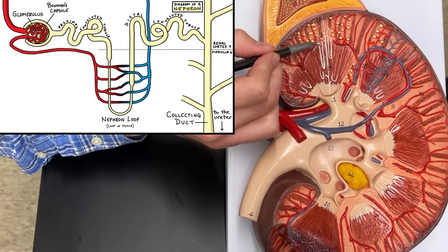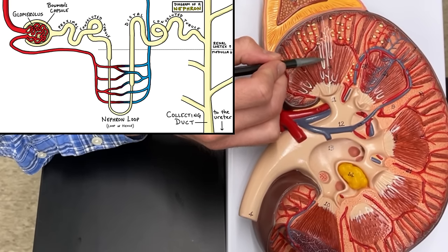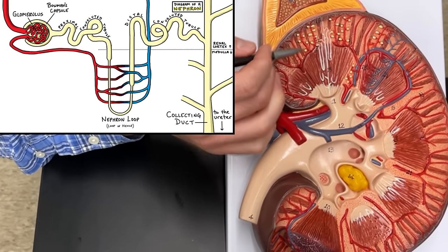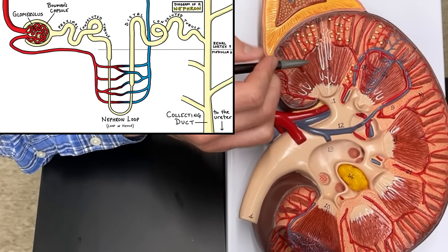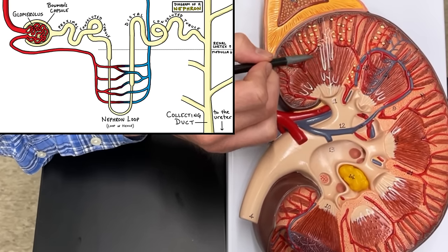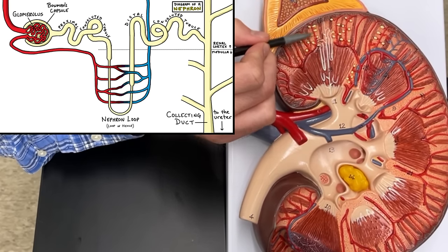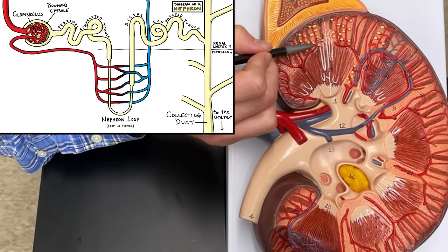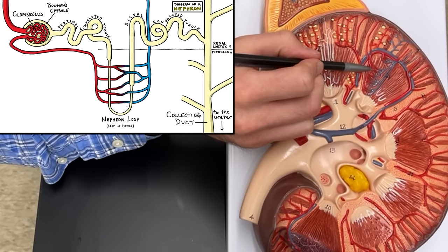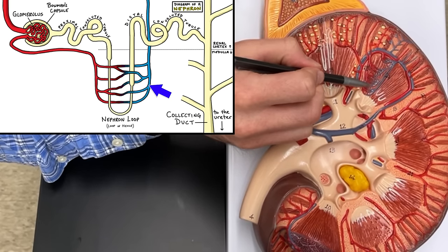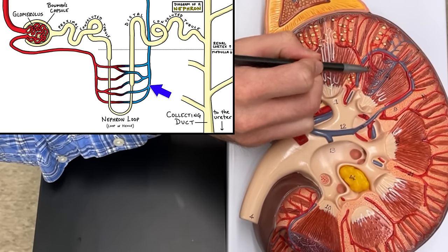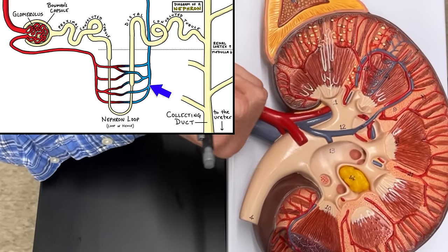These nephrons — which include the capsule, the tube that loops down, and the collecting duct — there are millions of those throughout the kidney. They're located in the renal pyramids, including the renal medulla, and then part of them is in the renal cortex. Those tubes of the nephron are also surrounded with blood vessels that come into the kidney, and we see those in the diagram I've drawn.